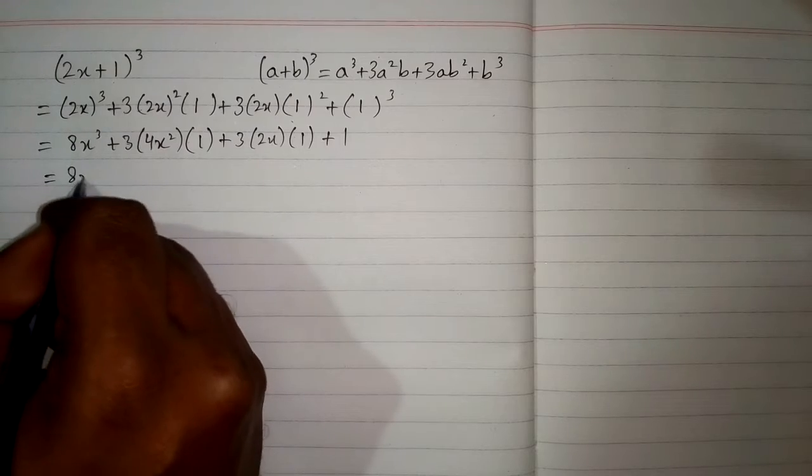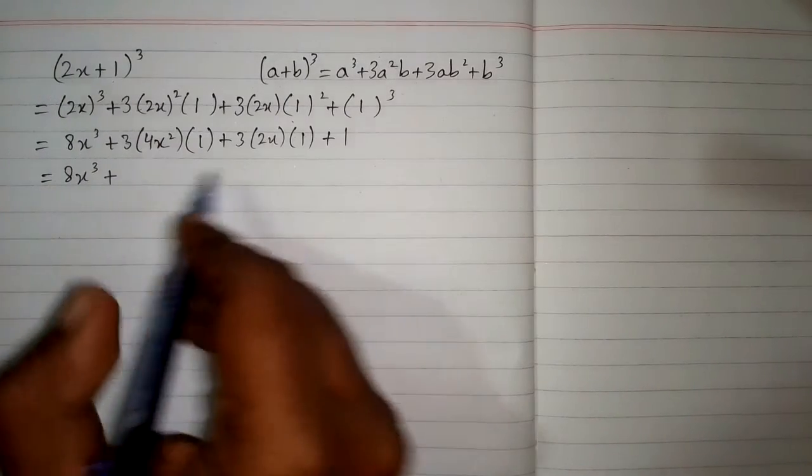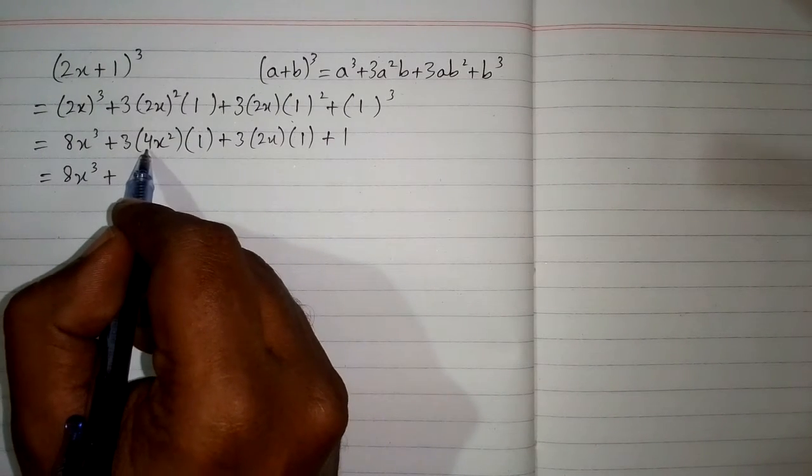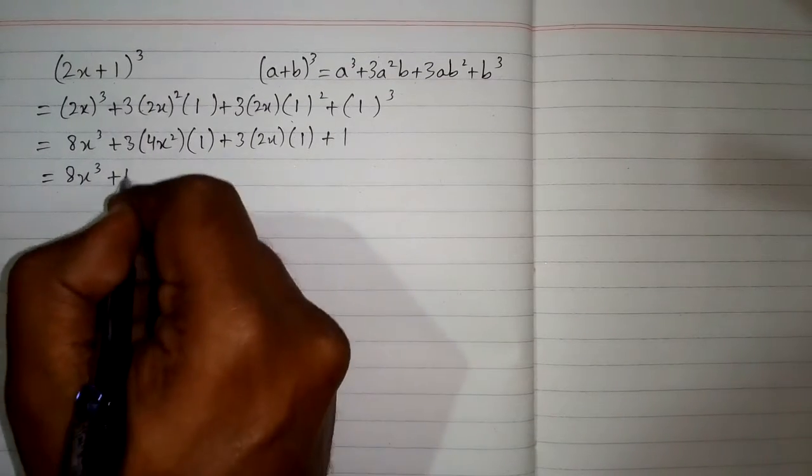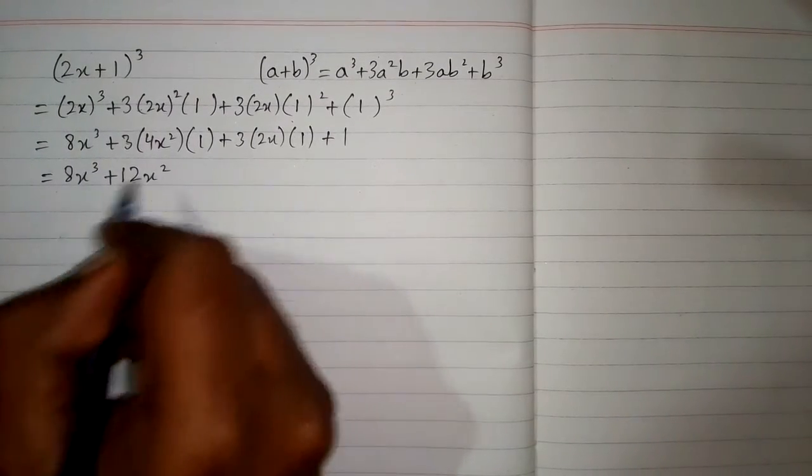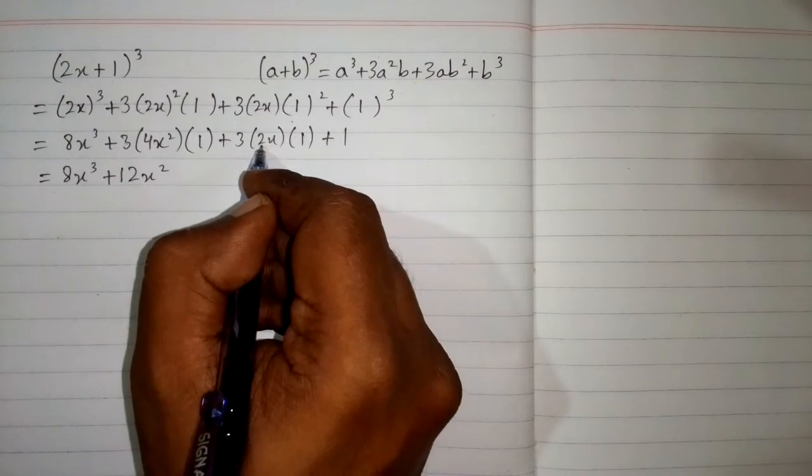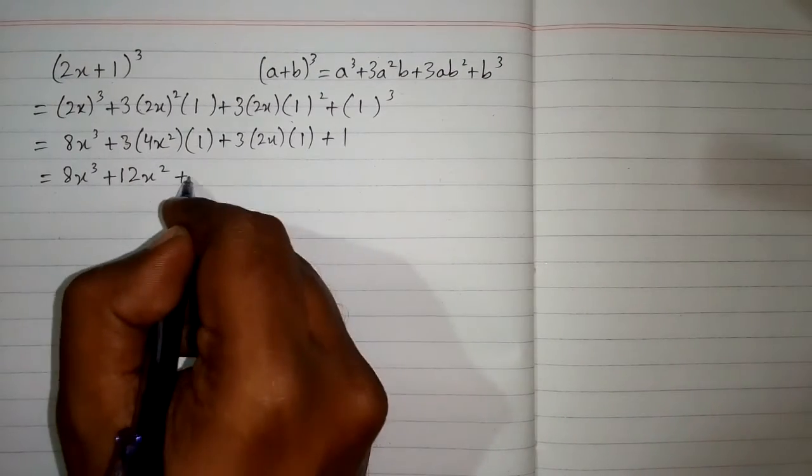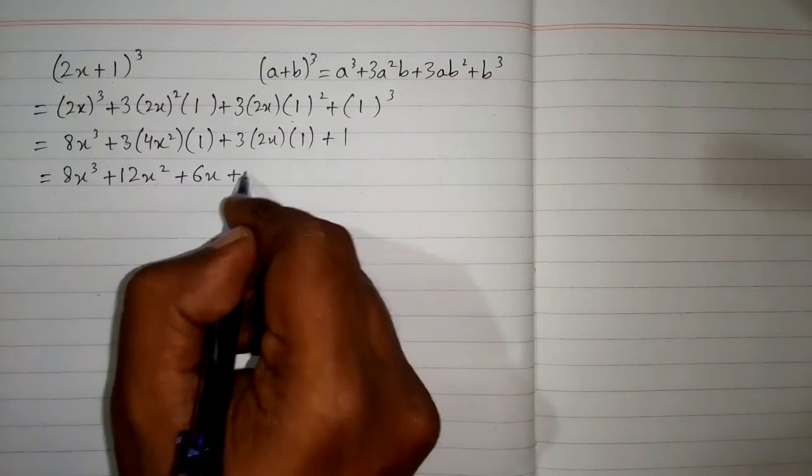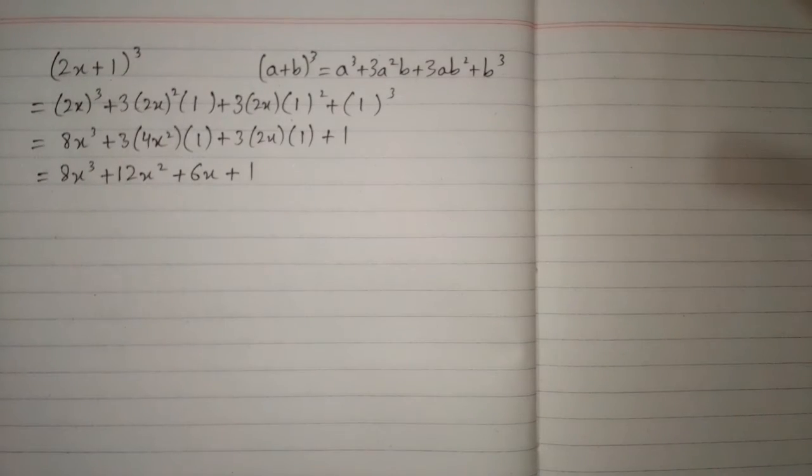Now we have 8x cube plus 3 times 4 is 12 and 12 times 1 is 12, so we have 12x square. Then 3 times 2 is 6 and 6 times 1 is 6, so we have 6x then plus 1 and this is the required answer.